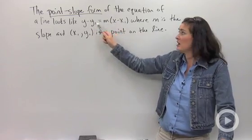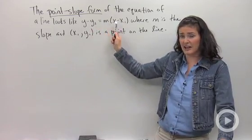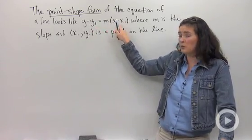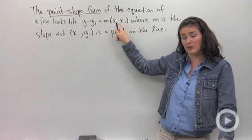These guys in your answer are going to stay as the letters x and y. These little ones with the subscripts are going to become numbers.